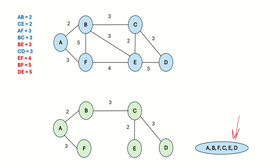This is the final MST we have created. It contains all 6 vertices and has 5 edges — that is, 6 minus 1 — which confirms it is a valid minimum spanning tree. This is how Kruskal's algorithm helps us compute the minimum spanning tree.